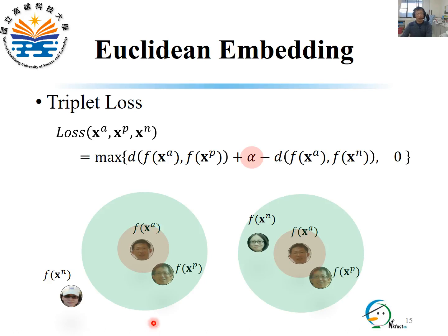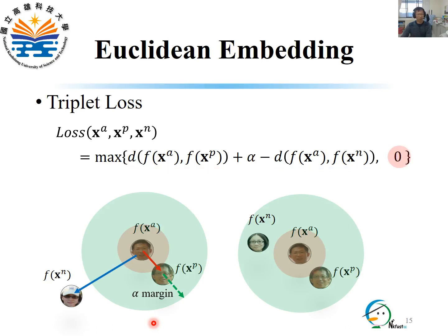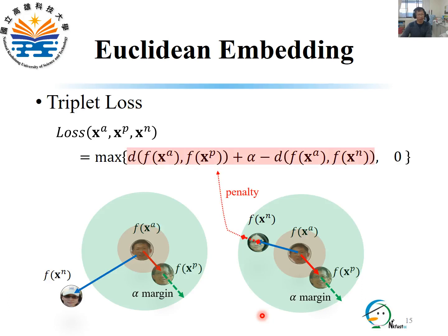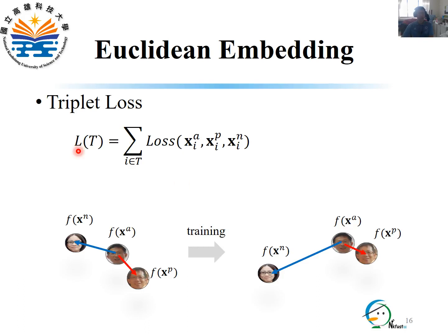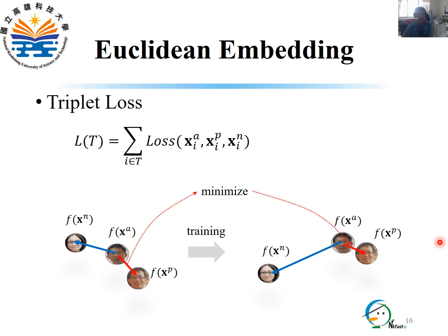In the left case, the negative is far enough from the anchor, so the distance between anchor and positive plus alpha is less than the distance between anchor and negative — therefore the loss equals zero. In the right case, the negative is close to the anchor, and a penalty equal to the length of the red segment is added. The total loss for training FaceNet is defined as the sum over all triplets T, the set of all possible triplets. Training FaceNet means finding an embedding Euclidean space that minimizes the distance between anchor and positive while maximizing the distance between anchor and negative.